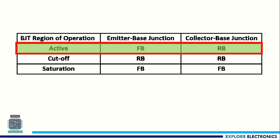The BJT regions of operation are the active region, cutoff region, and saturation region. To use the BJT as an amplifier, we must bias the two junctions correctly: the emitter-base junction must be forward biased, and the collector-base junction must be reverse biased. When these conditions are met, the BJT is in the active region and can function as an amplifier.